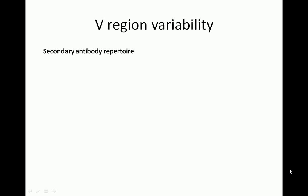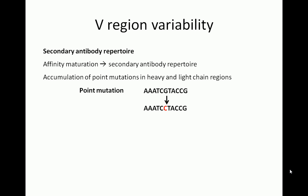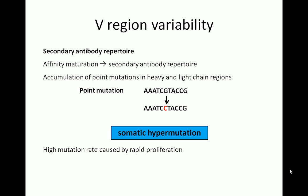The diversity of the secondary antibody repertoire is also increased by increasing variability in the V region. Recall that affinity maturation is a process that contributes to the generation of the secondary antibody repertoire. Affinity maturation results from the accumulation of point mutations in heavy and light chain regions. This process is called somatic hypermutation, and it occurs as B cells proliferate rapidly in response to antigen stimulation.